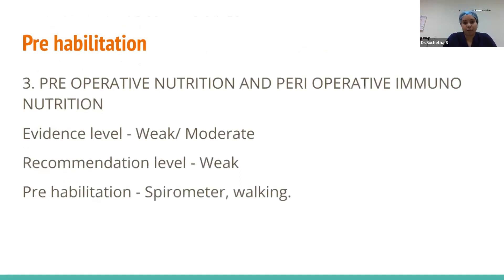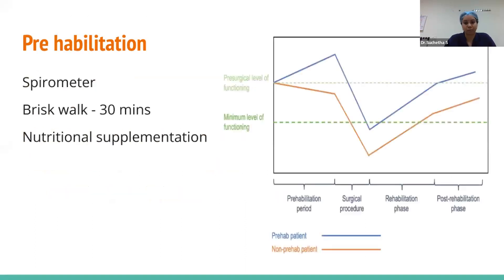Prehabilitation forms the most important part of the preoperative workup in ERAS. Initially it had weak to moderate evidence, but current papers suggest very strong evidence, and the recommendation has moved from weak to strong. A patient who has been prehabilitated shows a much better recovery pathway compared to someone who has not, with a less steep decrease during the surgical and rehabilitation phases.